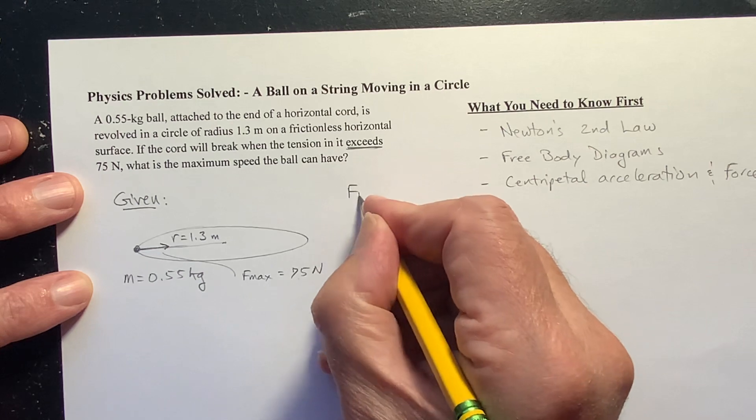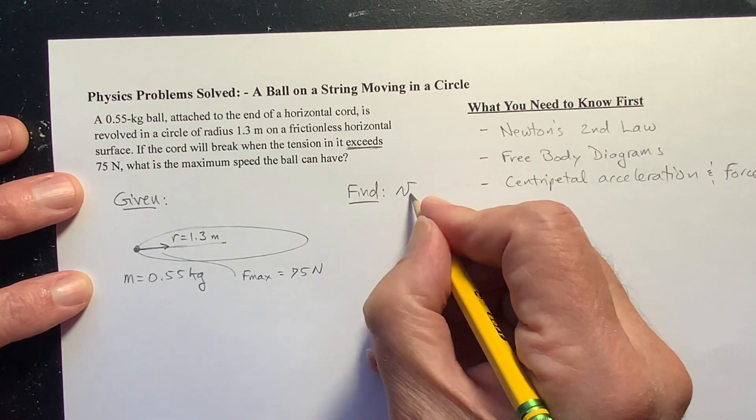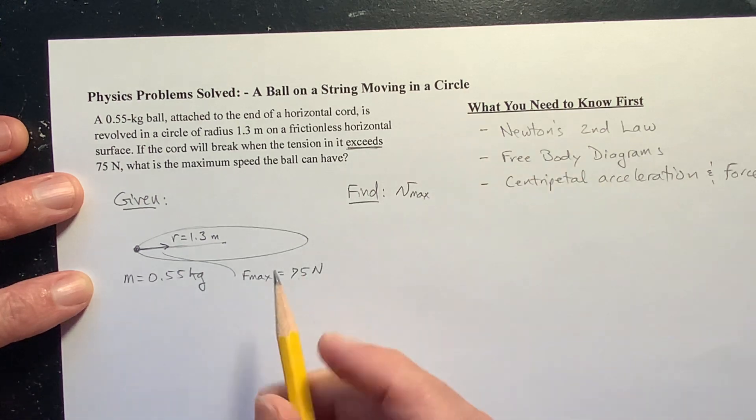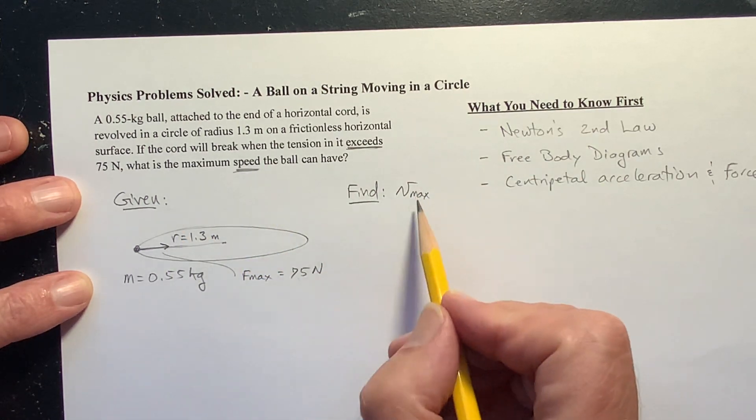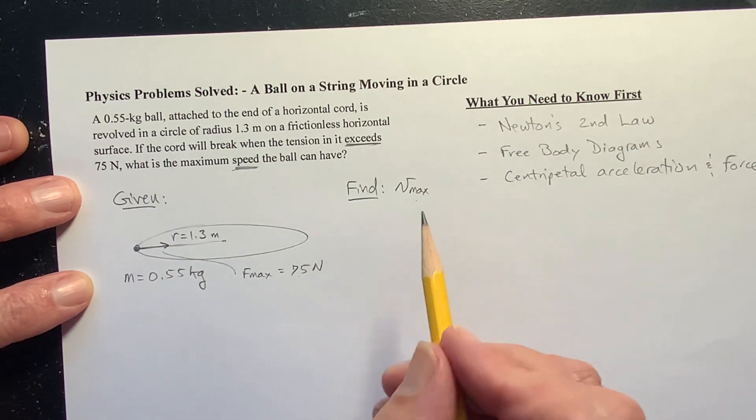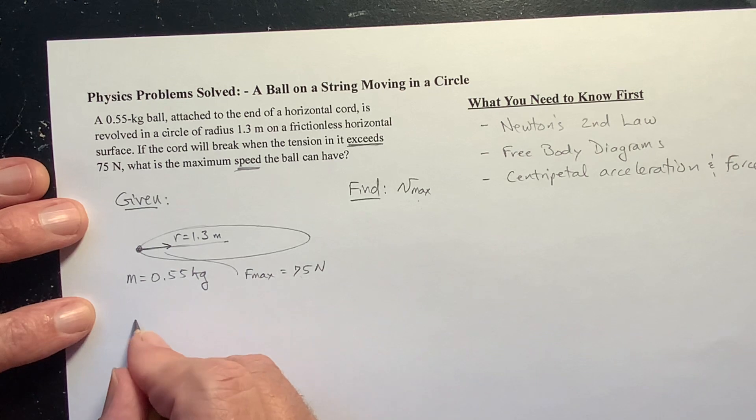And what are we trying to find? Well, we want to find what is that maximum velocity, or speed. Really, we're talking about speed. I'll just still use the letter V for velocity, but we want how fast, what's the fastest this thing can go? And so let's solve it.